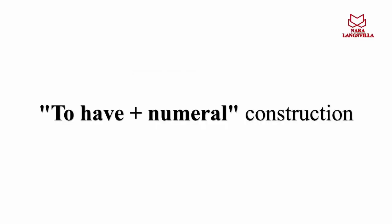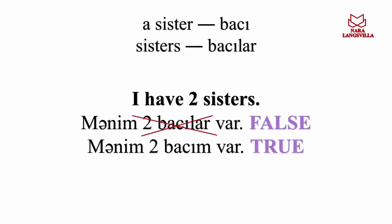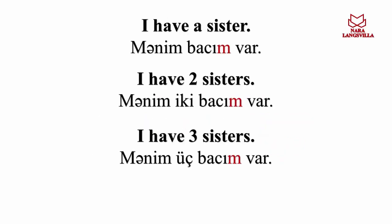To have plus numeral construction. I have two sisters — mənim iki bacım var. I have a sister — mənim bacım var. I have two sisters — mənim iki bacım var. I have three sisters — mənim üç bacım var. We change only numerals; we don't need to do any change in the word root or suffixes.